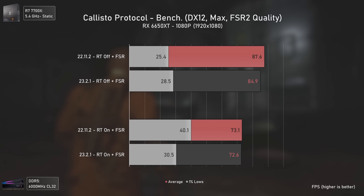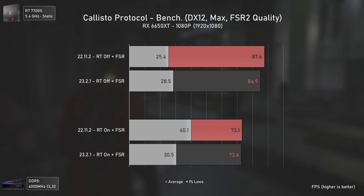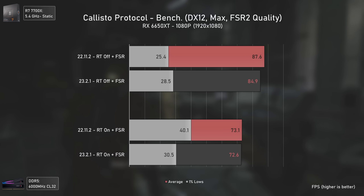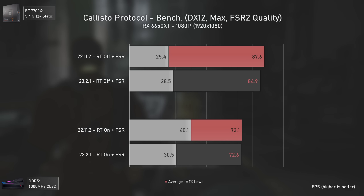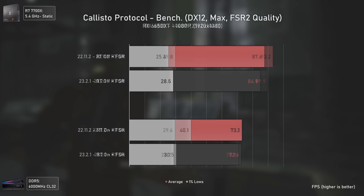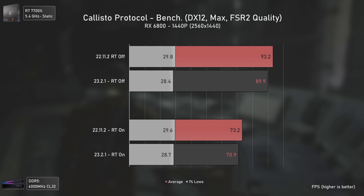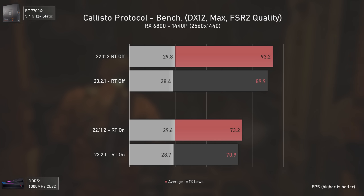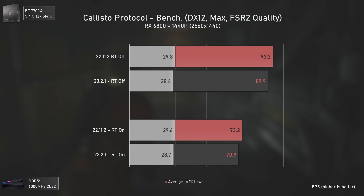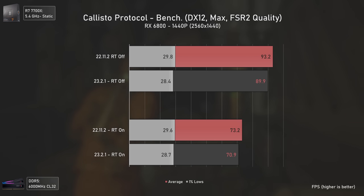The Callisto Protocol benchmark is currently a total mess, and I'm already regretting not testing in real gameplay. At 1080p the RX 6650 XT saw no performance uplifts whatsoever, with 1% lows all over the place. The RX 6800 shows more stable results overall but still lower FPS in the most recent drivers. The benchmark is clearly broken — rasterization results are barely higher than ray tracing ones, whereas in real gameplay the difference is much larger. Just forget about this game.